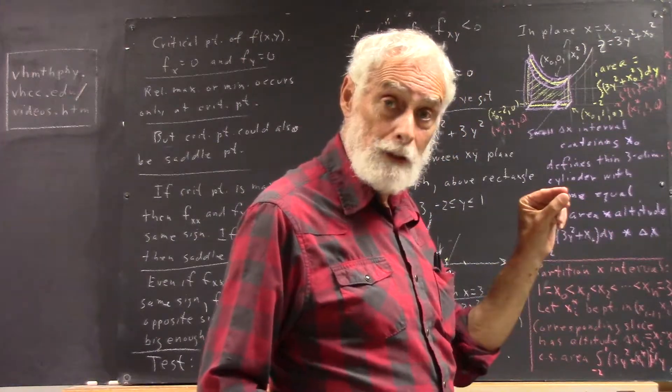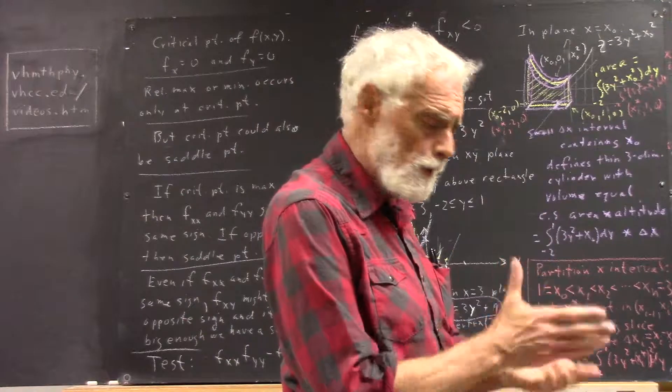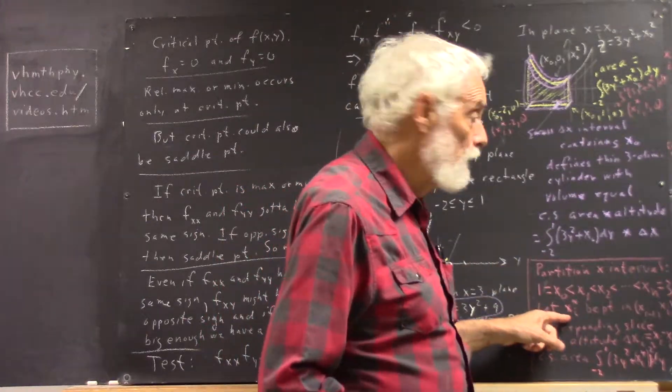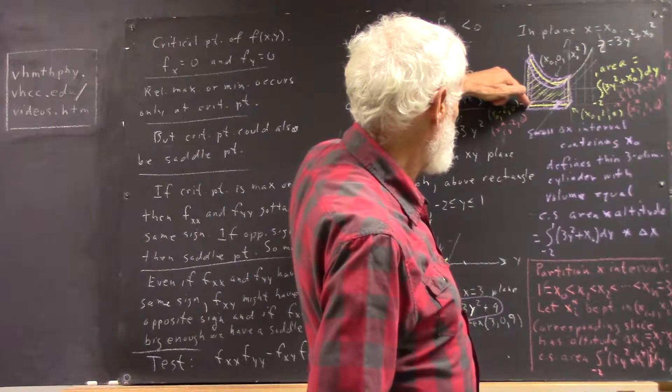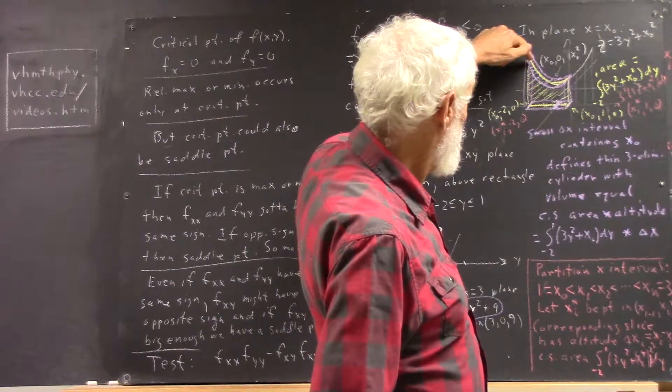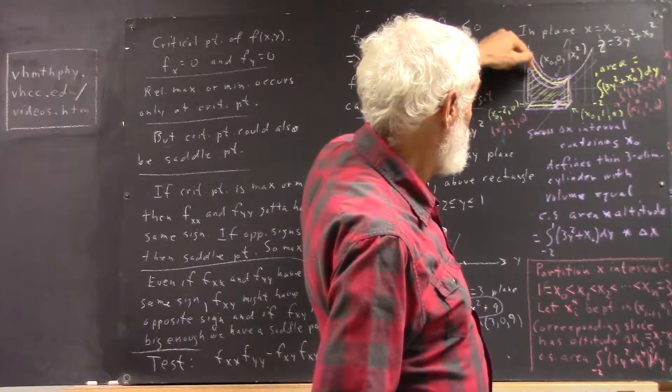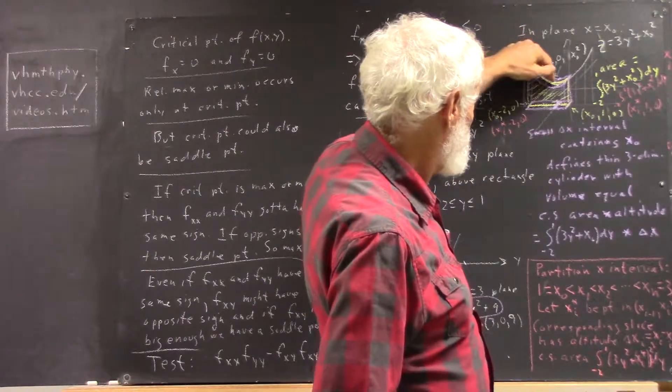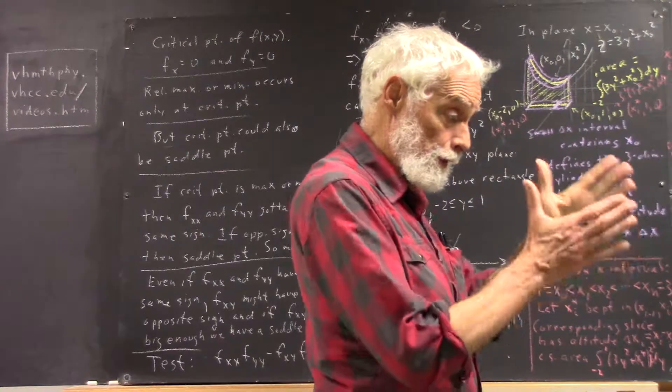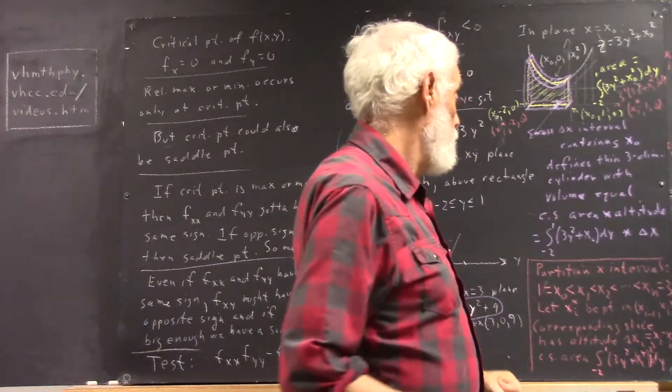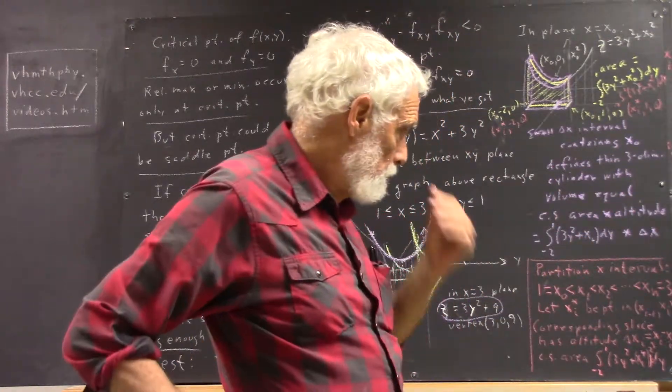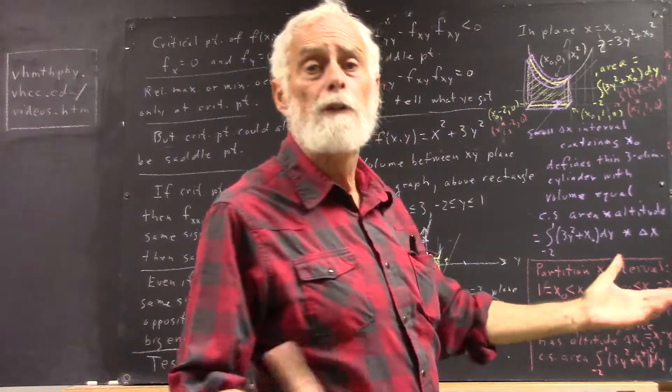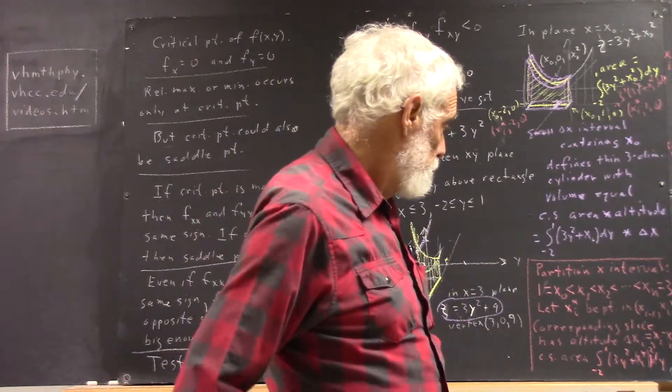And we'll have x_1 star be some point between x-naught and x_1. We don't care where it is. These intervals get really tiny. It doesn't really matter where in the interval you do this. And the point where you have the x_i star corresponds to where we had our x-naught up here. That would be like the yellow region between the back and the front face of our slice.